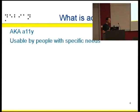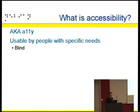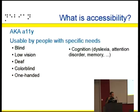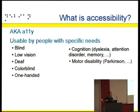So what is accessibility? It's contracted as A11y. It means being usable by people with specific needs — it doesn't necessarily mean handicapped. So of course you'd think about blind people, but there are also people with just low vision, deaf people, colorblind people, people with just one hand — try pressing Control and Backspace with just one hand — cognition issues, and motor disability: using a keyboard with Parkinson's is quite difficult without something that helps you.